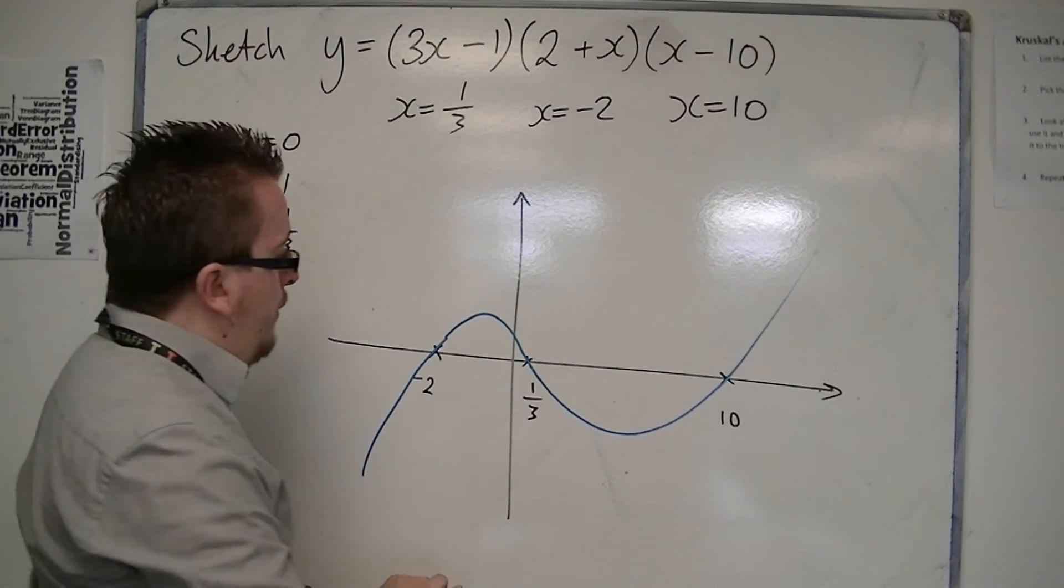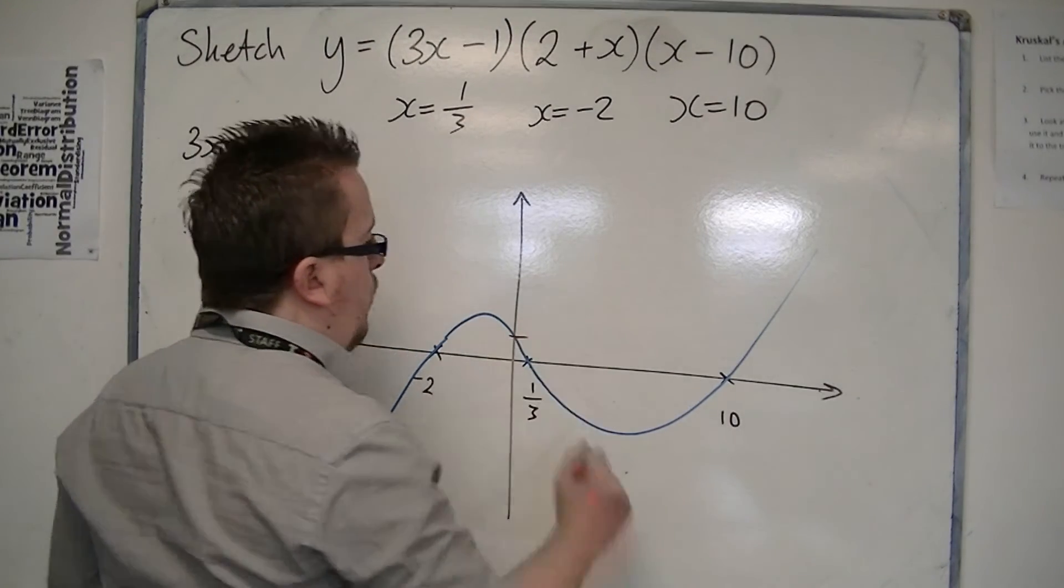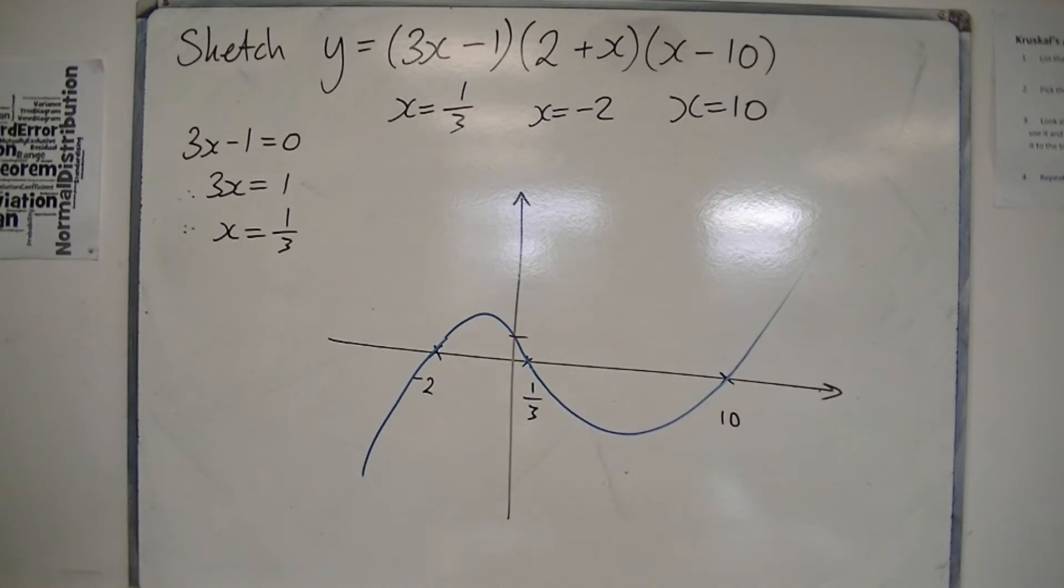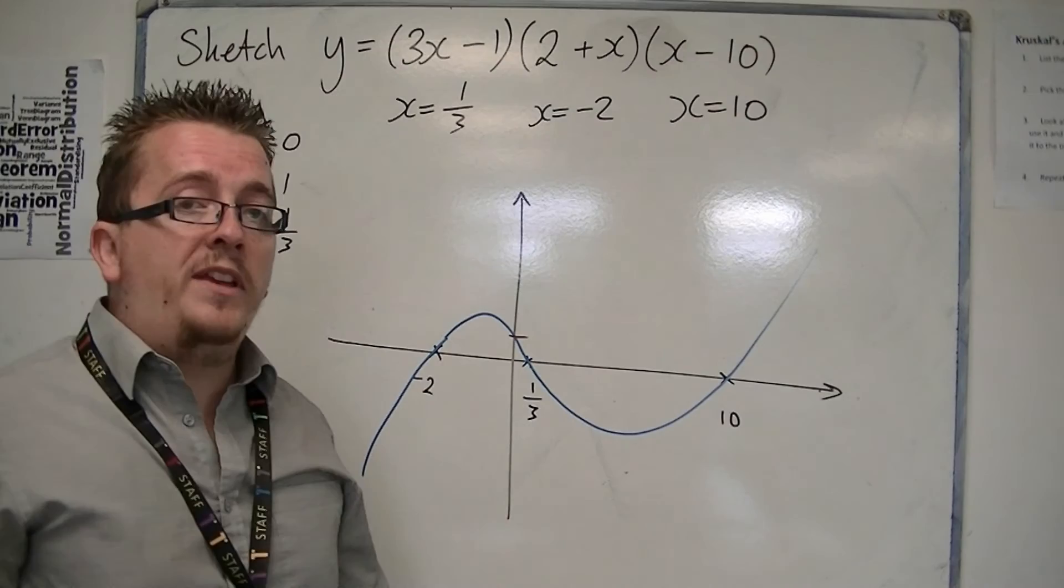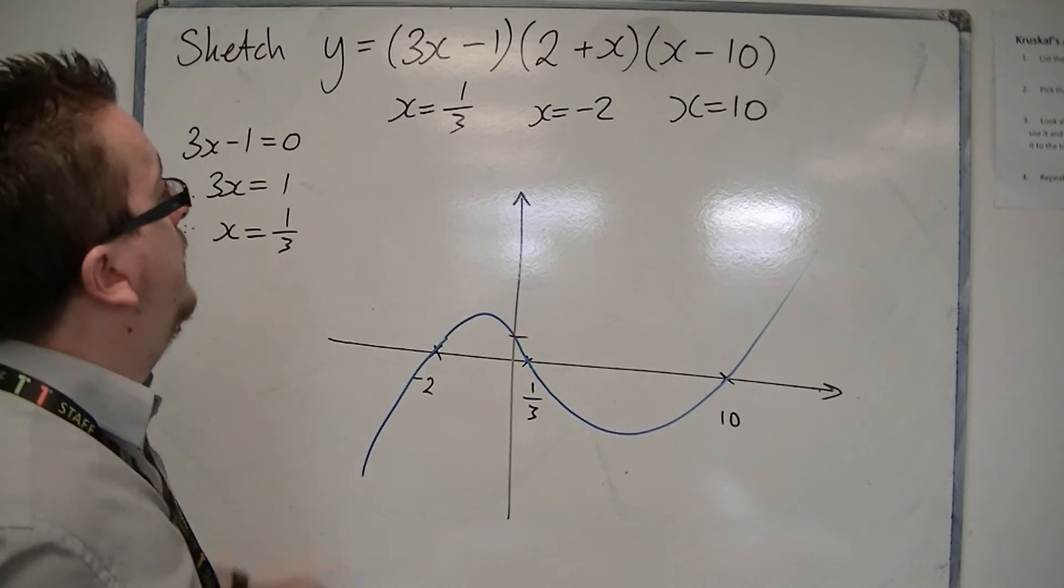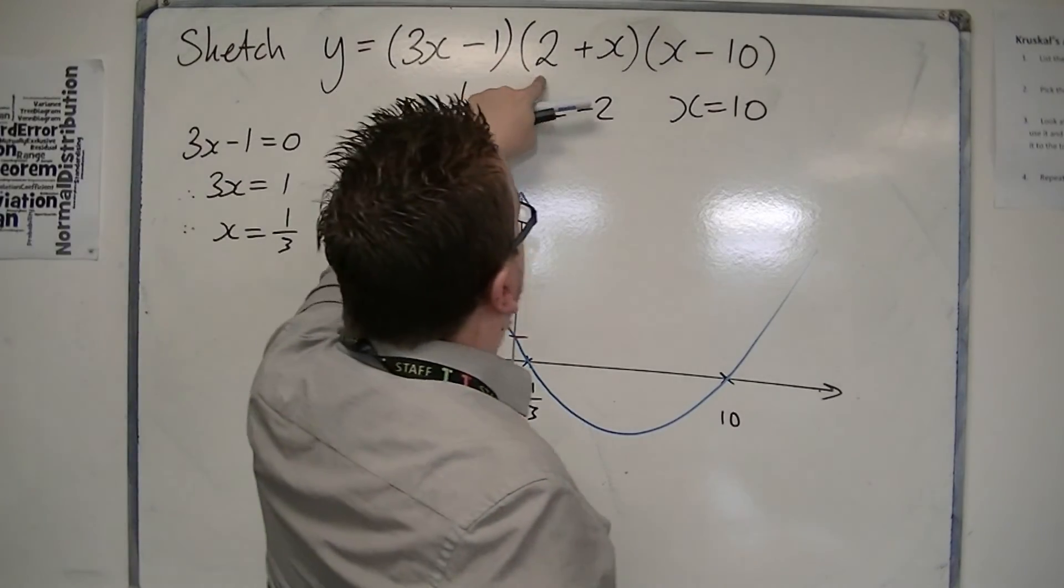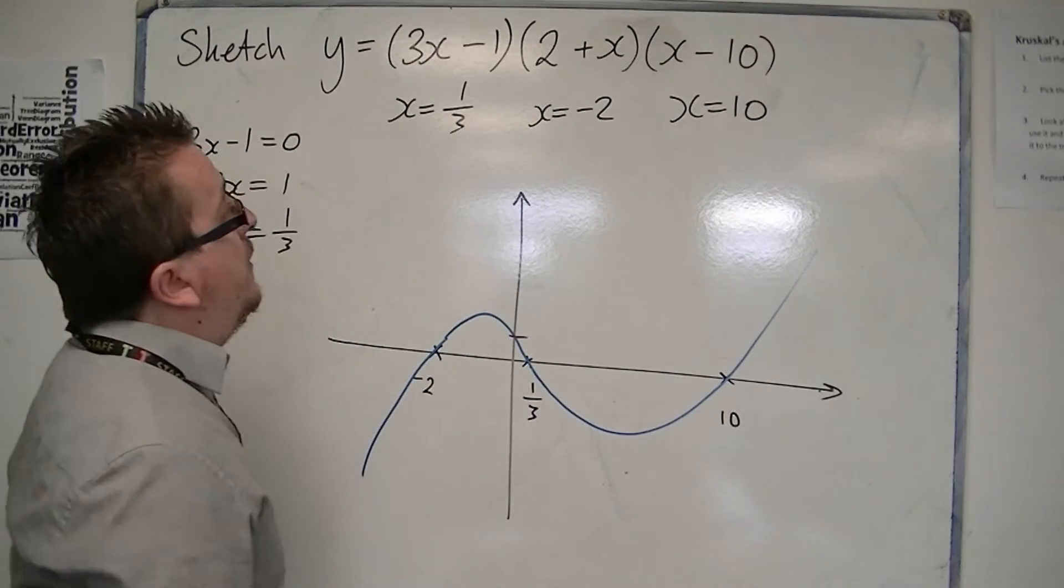So the only thing I need to do now is figure out where is it crossing the y-axis. I can do that by multiplying the three constant terms together inside the three brackets. Minus 1 times 2 times minus 10, so that would be 20.